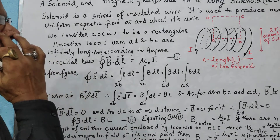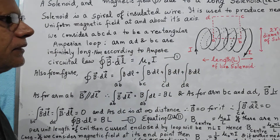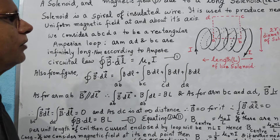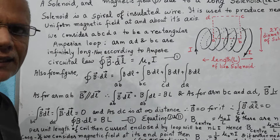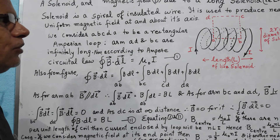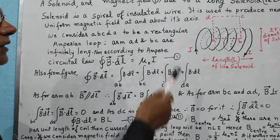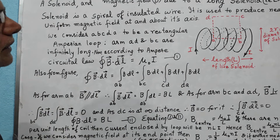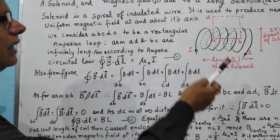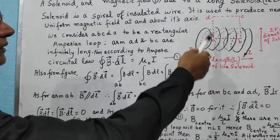The solenoid carries some current through it, and once current starts flowing through the coil, there has to be some magnetic field produced. So we are going to find the magnetic field produced due to the solenoid, which carries some current I. We have also assumed that the length of the solenoid is large — much larger as compared to its radius.